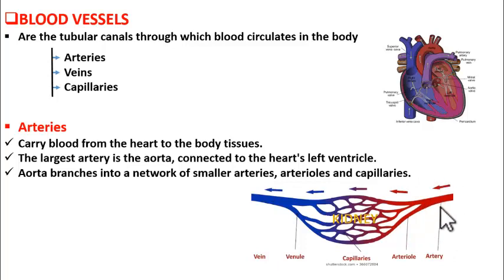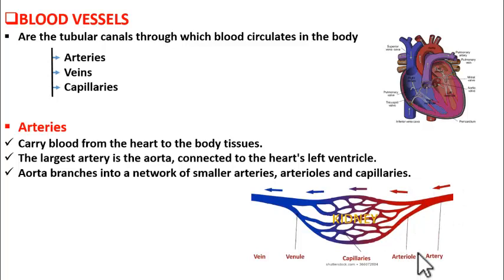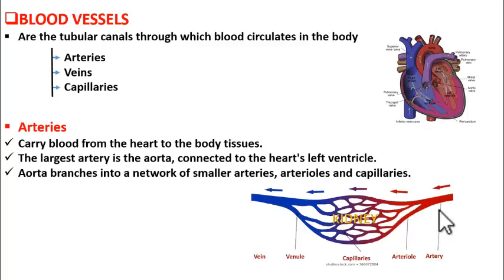For instance, one artery arising from the aorta goes to the kidney. After entering the kidney, that artery breaks into arterioles — arterioles are the branches of the artery. These arterioles again branch and form fine tube-like structures called capillaries. So, the aorta becomes smaller arteries, each artery goes into a specific organ, and inside each organ that artery becomes arterioles, which then form a network of capillaries.